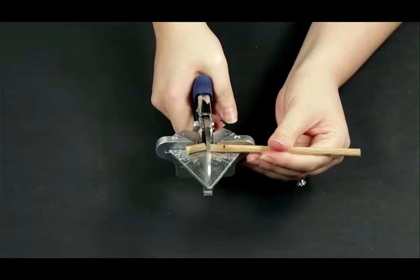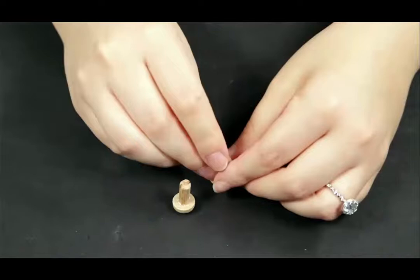Step 15: Glue wooden end caps to the small pieces of dowel you just cut.